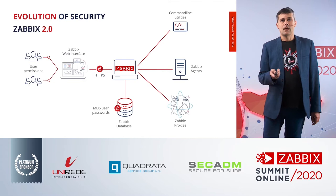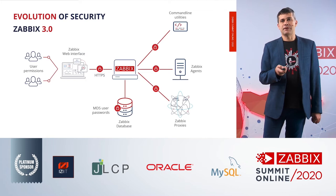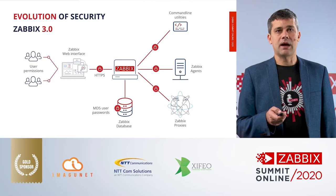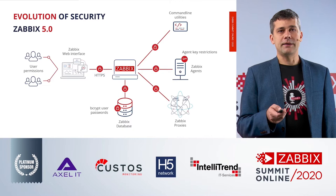A huge improvement came with Zabbix 3.0, where encryption was introduced between different Zabbix components — between Zabbix servers, proxies, agents, and command line utilities, making the system much more secure. Next, Zabbix 5.0 introduced encryption between the Zabbix server and the database. Now with Zabbix 5.2, you can keep your macros absolutely safe by storing them in HashiCorp Vault, making them unreachable for perpetrators. Additionally, granular permissions were added.